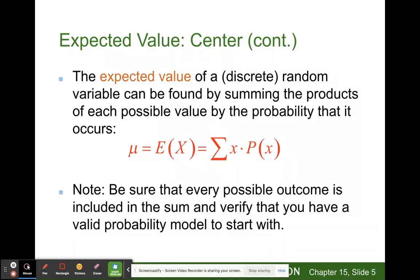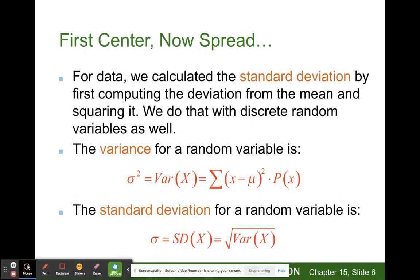The expected value of a discrete random variable can be found by summing the products of each possible value by the probability that it occurs. mu equals E(X) which equals the sum of x times the probability of that x occurring. Be sure that every possible outcome is included in the sum and verify that you have a valid probability model to start with.